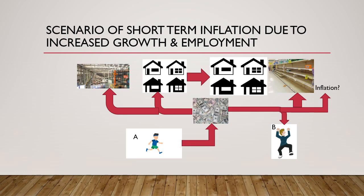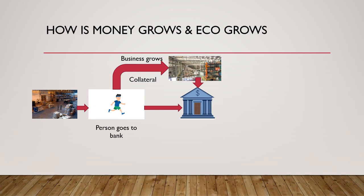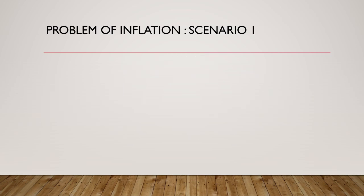Growth and an increase in employment opportunities is inflationary in the economy, at least in the short term. Now let's see how money grows in the system. The person who took the loan invests in his business, and his business grows. He sees future demand and approaches the bank for more loan. Since the business has grown and the person has a bigger collateral, the bank gives a bigger loan, and more money is created in the economy.